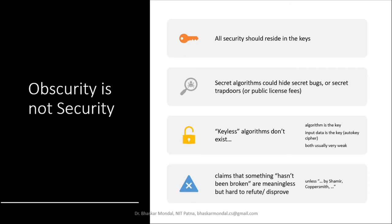The first thing to understand is that algorithm security is not true security. All security should reside in the key. The encryption algorithm is open to all — the mechanism everybody knows — but the only thing that is secret is the key. Your cipher is transmitted over the channel or network so people can capture it, but the only thing that maintains security is the key. People should not be able to predict or calculate the key from the cipher.